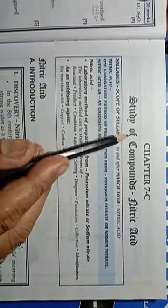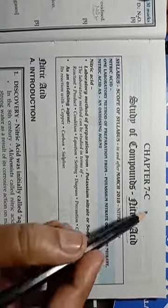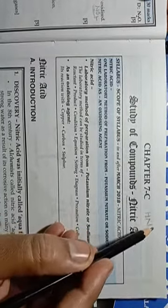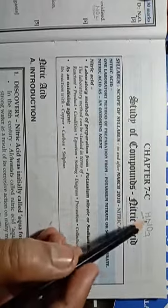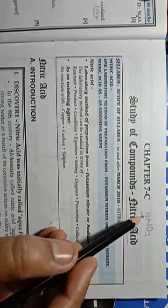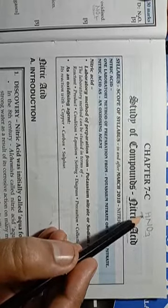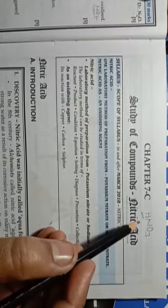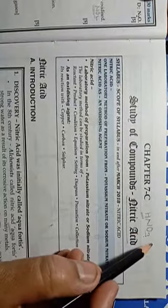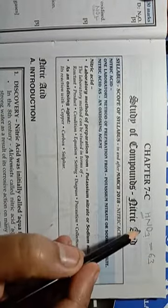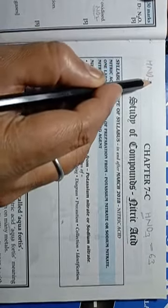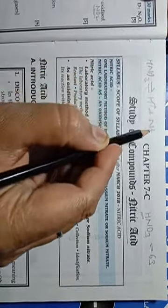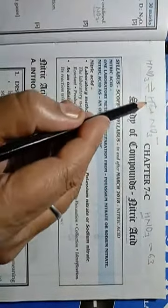Today we will start Chapter 7C: Study of Compounds - Nitric Acid. The molecular formula of nitric acid is HNO3. It is a monobasic acid due to the presence of one hydrogen, so per molecule nitric acid releases one H+ ion. That is why the basicity of nitric acid is one. Its molecular mass is 63, and the dissociation reaction gives H+ plus NO3 minus.